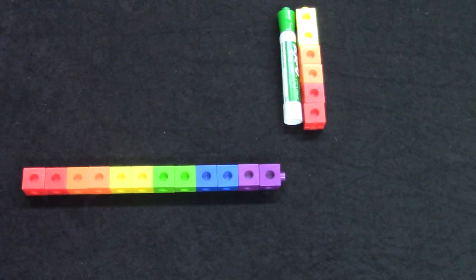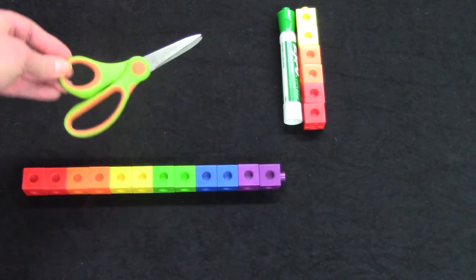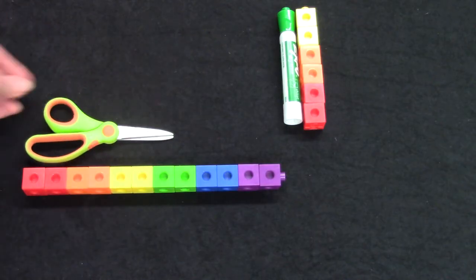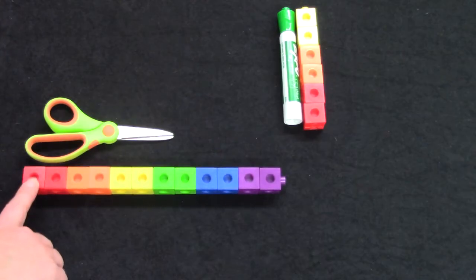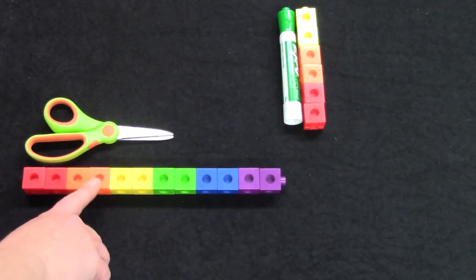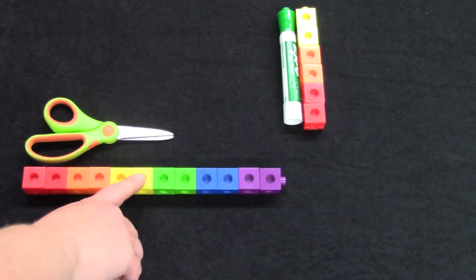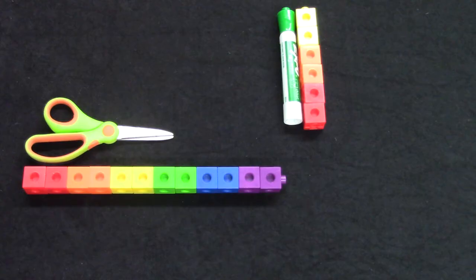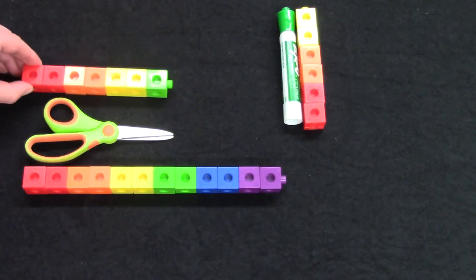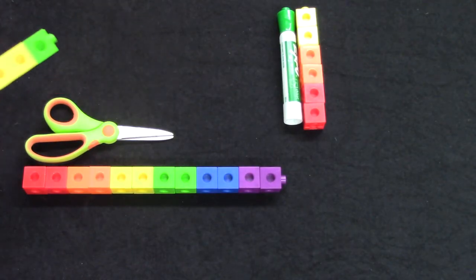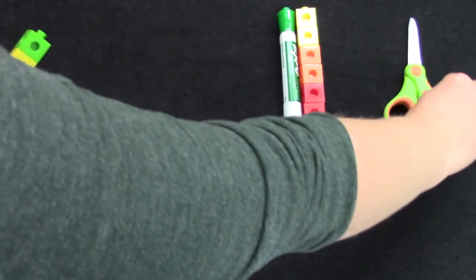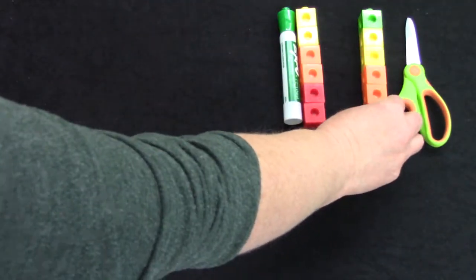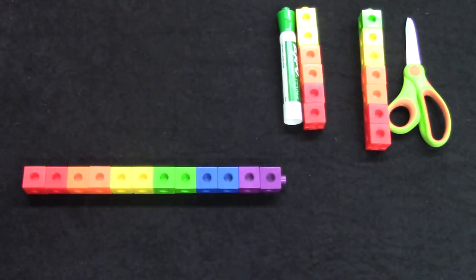What else could I measure? What about these scissors? How long are the scissors? Let's count. One, two, three, four, five, six, seven. They are seven cubes long. I'm going to put those up here as well. Our scissors are seven cubes long.